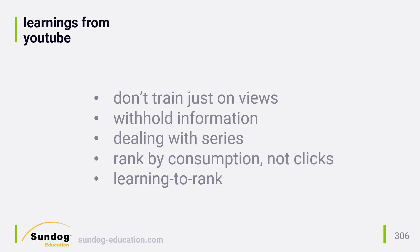Here are some key takeaways from the paper as a whole. First, don't rely on just view data when training a recommender system. The folks at YouTube came up with as many signals as they could from the user's past behavior and the user's attributes, and for some features they also fed these in as squares and square roots in case there were non-linear relationships to be found. View data alone is too easily gamed and rewards clickbait videos that don't actually reflect a user's interests. They also withhold some information from their recommender system in order to prevent overfitting — for example, predicting a user will watch a Taylor Swift music video just because they searched for Taylor Swift isn't really helpful. They would have found that video from the search results anyway, and the relationship is a little too direct. As a result, they discard sequence information and obscure the search data fed into their system to try and prevent this sort of overfitting.